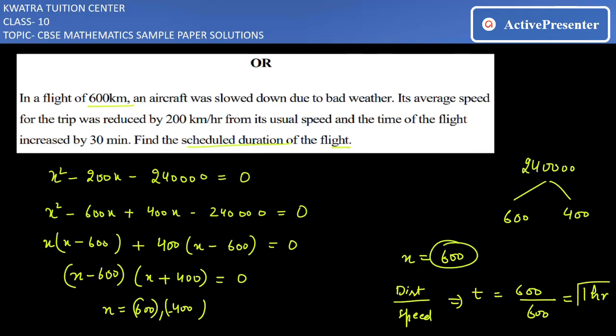The duration is 600 over 600, which is one hour. So yes, the duration for flight would be one hour. Now we have the next one, let's move to that part.